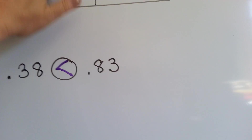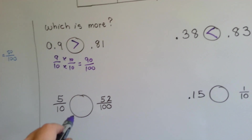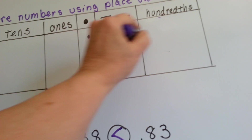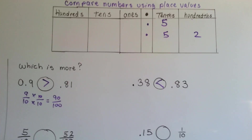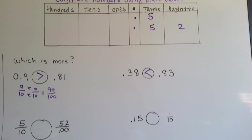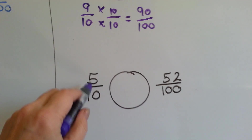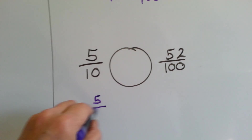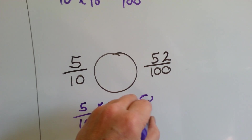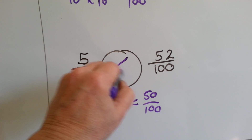Which is bigger — five-tenths or fifty-two-hundredths? There's an invisible zero placeholder in five-tenths. We can also give five-tenths the same denominator — multiply the numerator and the denominator by ten — and that would be fifty one-hundredths. So which is more, fifty or fifty-two? Because they both have hundredths, it's going to be fifty-two.